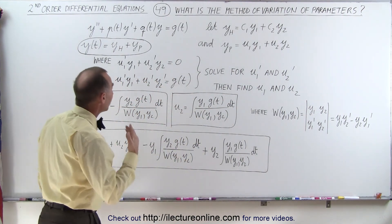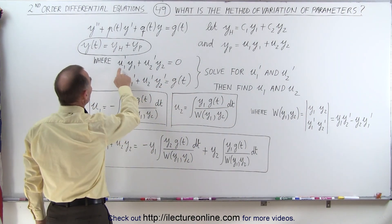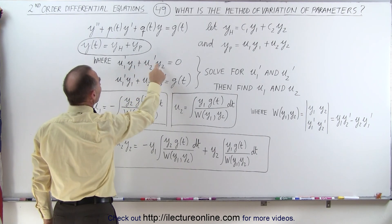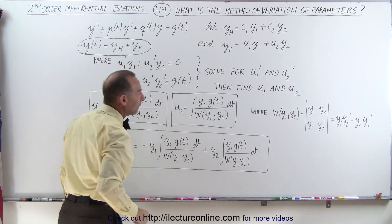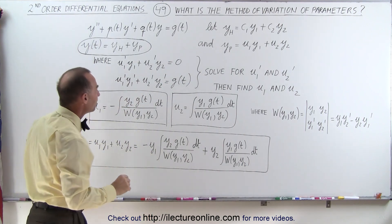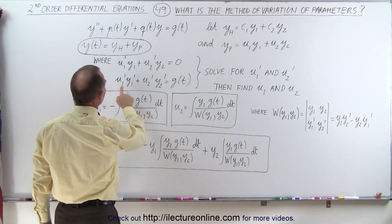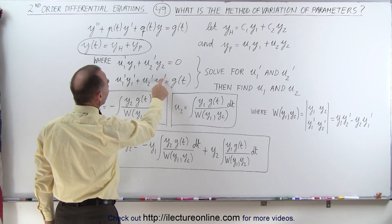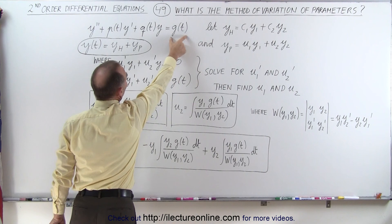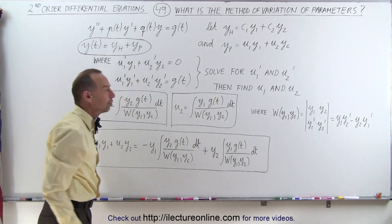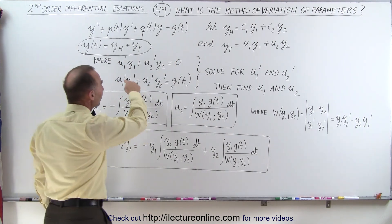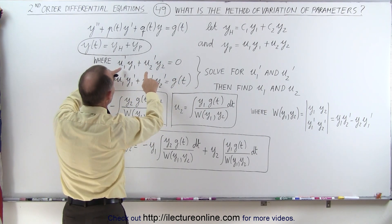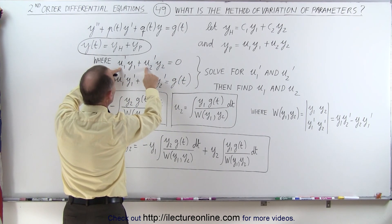To find u1 and u2, we use two equations: first, u1'·y1 + u2'·y2 = 0, and second, u1'·y1' + u2'·y2' = g(t), where g(t) is the function on the right-hand side of the differential equation. This gives us a set of two linear equations in the unknowns u1' and u2'.